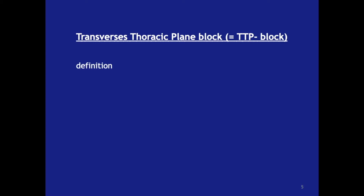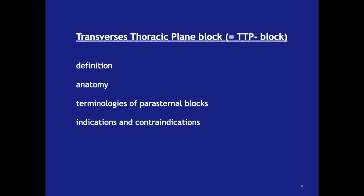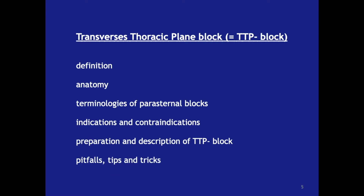In this presentation, I will first give a definition of the transversal thoracic plane block. Then we will talk about the anatomy to better understand this block. A very important section will be the terminologies concerning the various types of parasternal blocks described in literature, which can be confused with the transversal thoracic plane block. Then we will look at its indications and contraindications, and we will move to the preparation and description of the block with tips and tricks to avoid pitfalls.